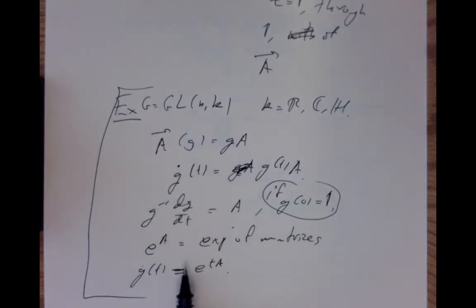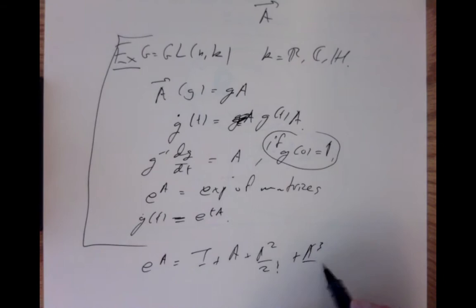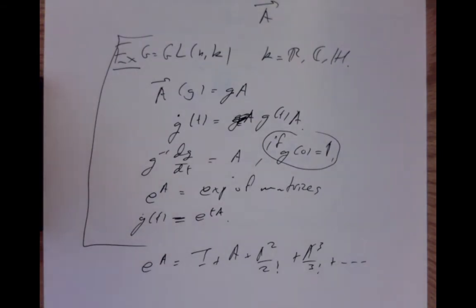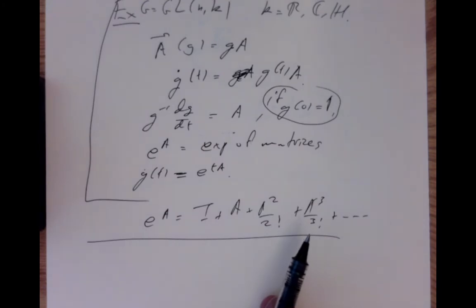We've computed the exponential map in this case — it's just the exponential of matrices: e^A = I + A + A²/2! + A³/3! + ···. There are Lie groups for which the exponential map isn't naturally thought of as an exponential — in the notes there are examples where you calculate it in coordinates and it doesn't give an expression involving exponentials of numbers. So it's a slightly odd name, but it has some reasonable properties.